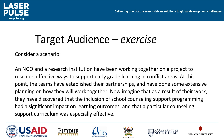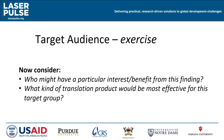We're now going to look at a short scenario to think about how the results of a researcher-practitioner collaboration might be translated into policy or practice. An NGO and research institution were working together on a project to research effective ways to support early-grade learning in conflict areas. The teams have established their partnership and done extensive planning. They discovered that the inclusion of school counseling support programming had a significant impact on learning outcomes and that a particular counseling support curriculum was especially effective. Now consider who might have a particular interest in or benefit from this finding, and what kind of translation product would be most effective for this target group.